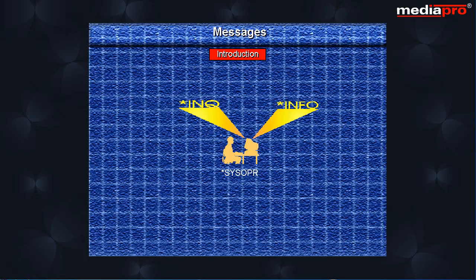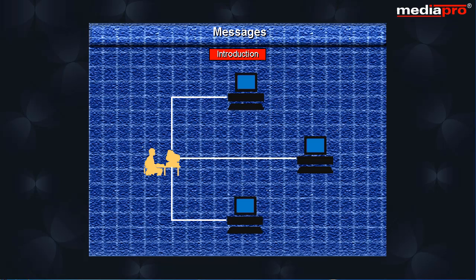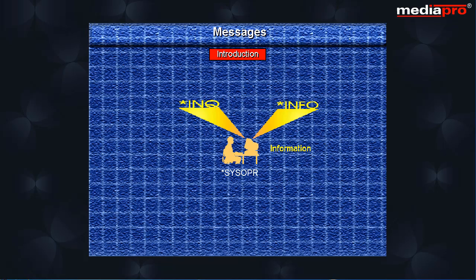An informational message, as the name itself implies, is used to provide information. For example, the system operator sends an informational message to all workstations to inform them that the system will be shutting down at 2 p.m.